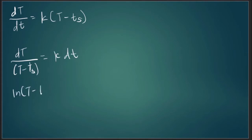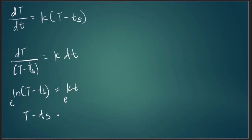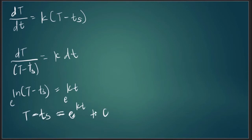So ln|T minus T sub s| is equal to kt plus C. We are going to raise both sides by e, so we end up with T minus T sub s equal to e^(kt + C). We could have this as plus C depending on how we interpret it — whether it's ln C or C itself. This is basically how we get the general solution.